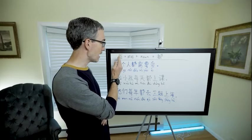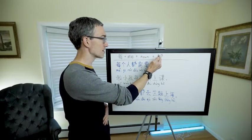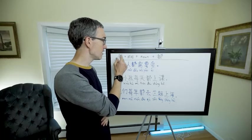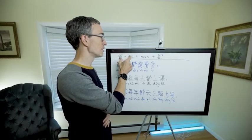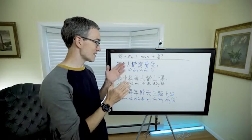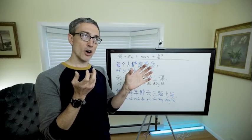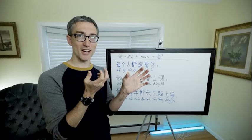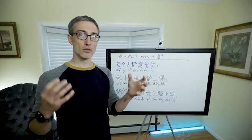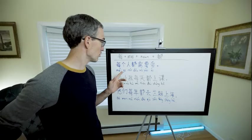So it's 每 plus measure word plus noun, and plus 都 (dōu). Sometimes the noun is omitted because it's understood, so it's 每 measure word, maybe a noun, and then 都. You'll see in these sentences that 每 and 都 meaning all are paired together almost all the time. It's kind of like they go together like peanut butter and jelly - 每都, 每都.